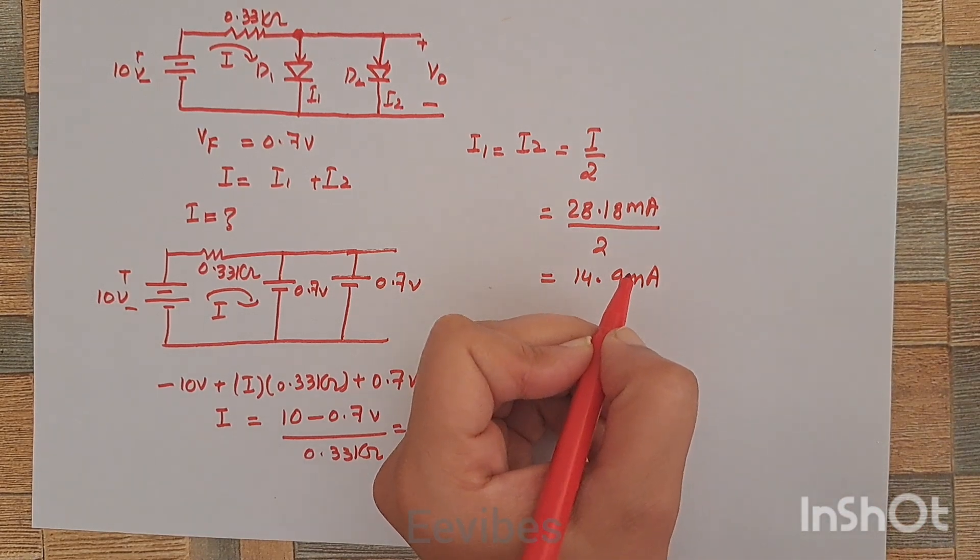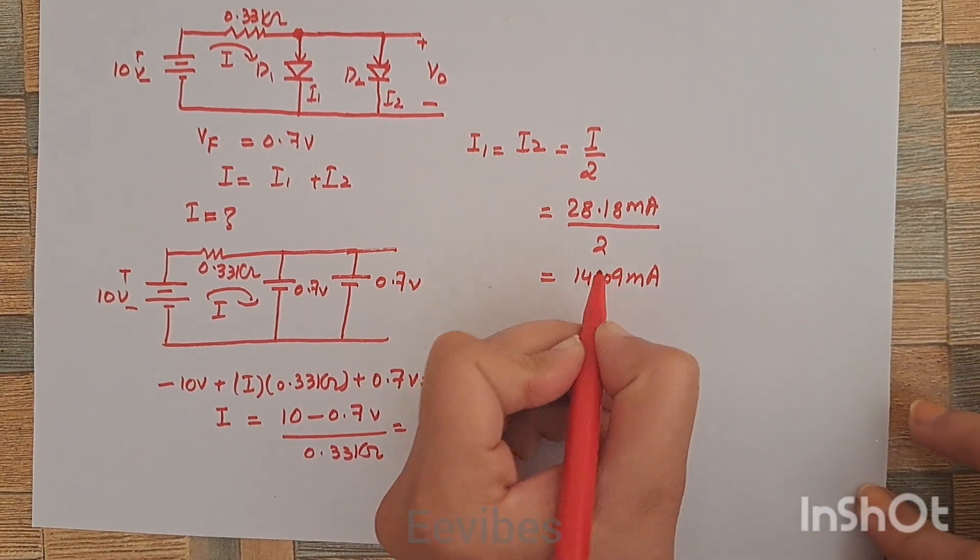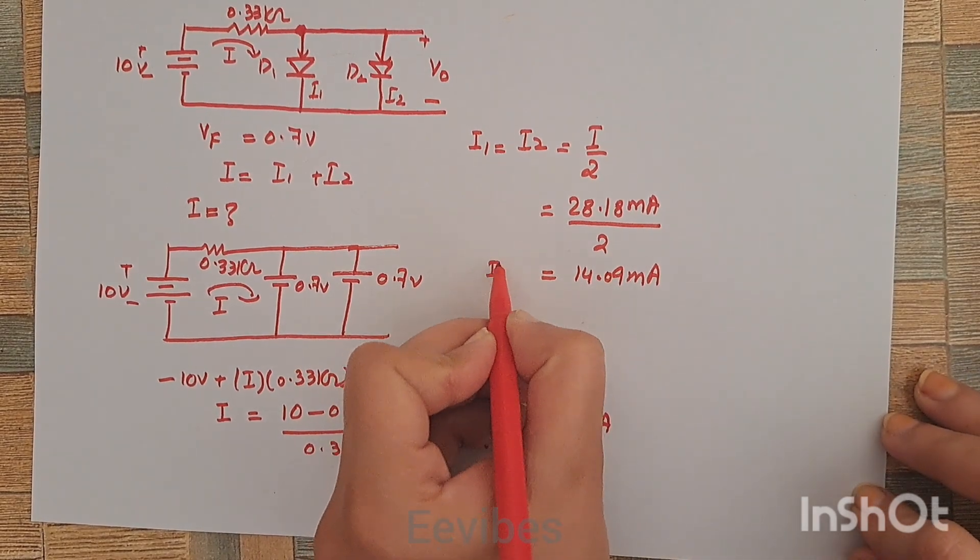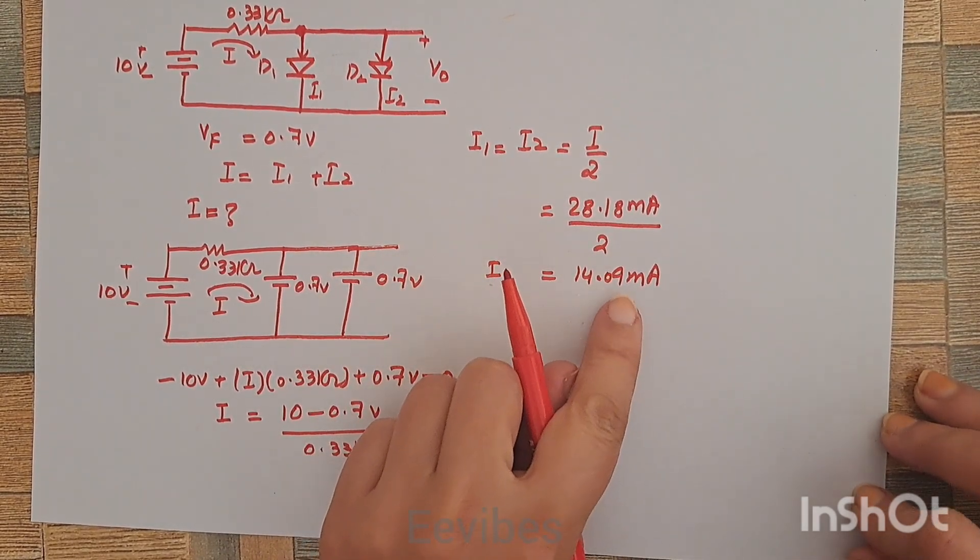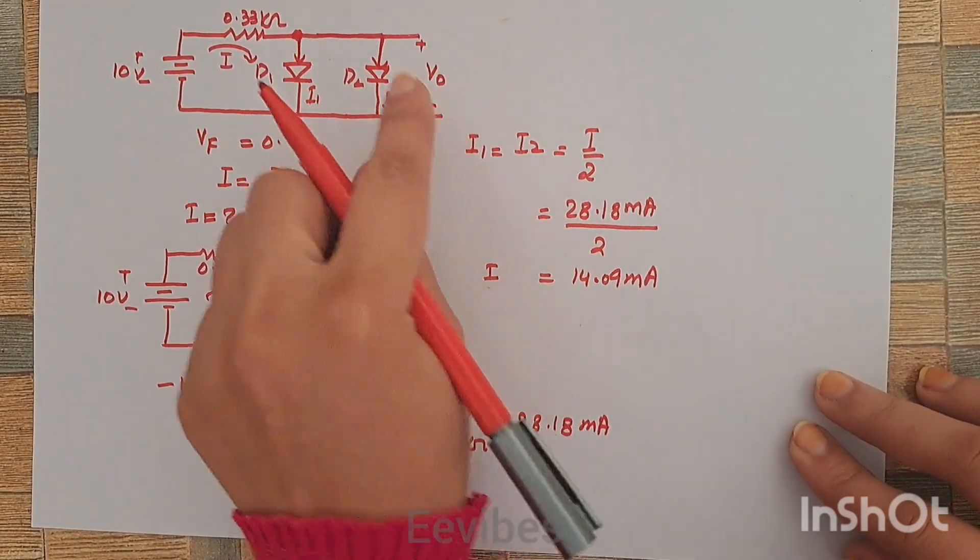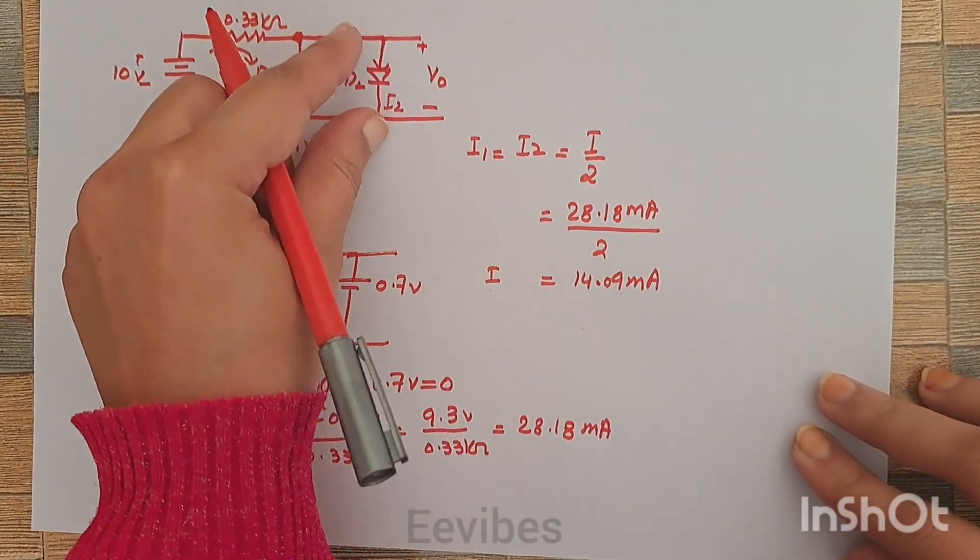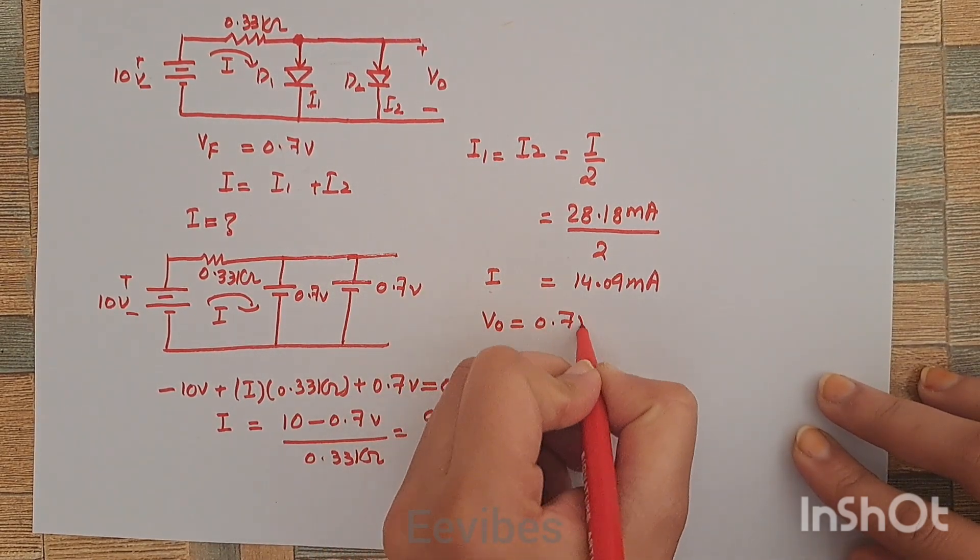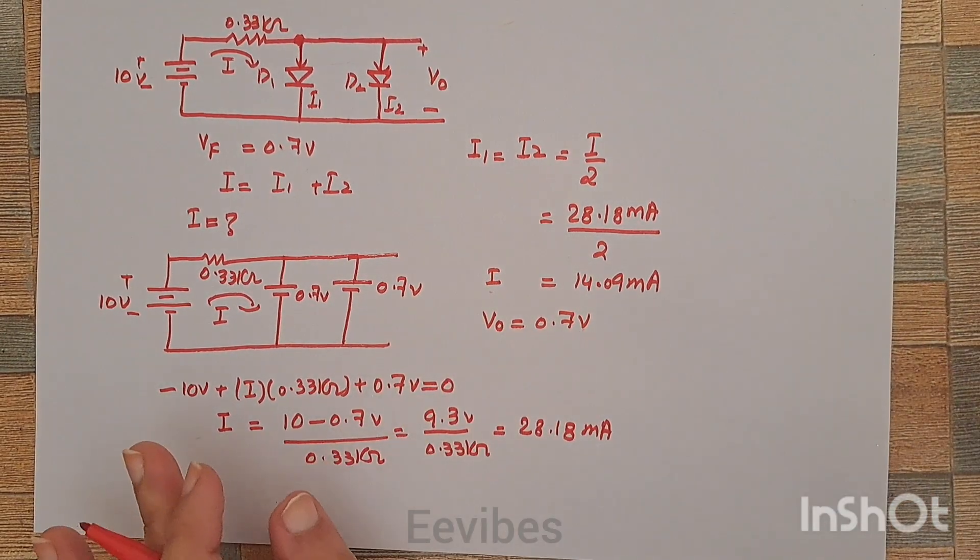This is the current flowing across each diode. Now what about the voltage? Since we are measuring the voltage across this diode which is actually forward biased, V_out will be equal to 0.7 volts. Thank you for watching.